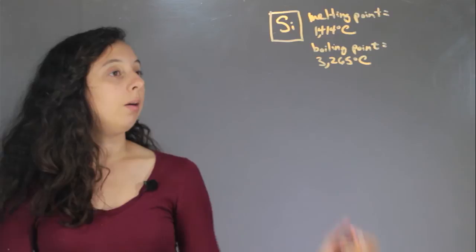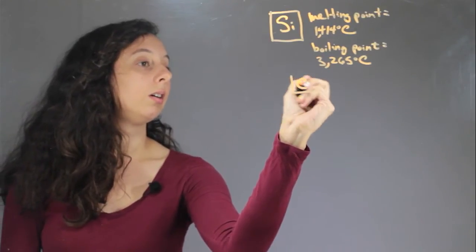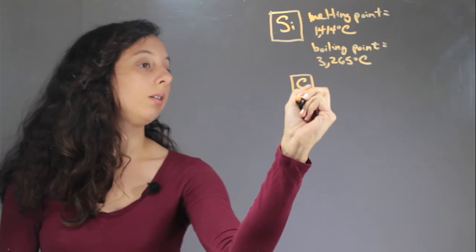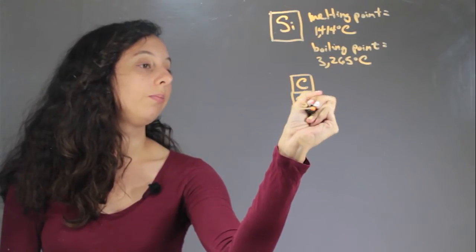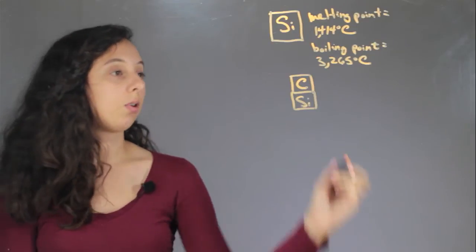So, other things about it, it's actually right under carbon on the periodic table. And just like carbon, it has four valence electrons.